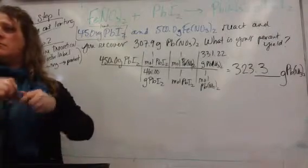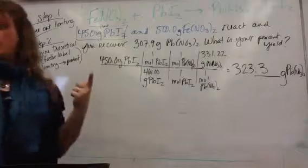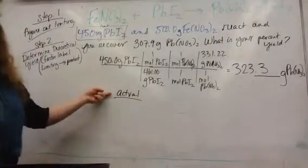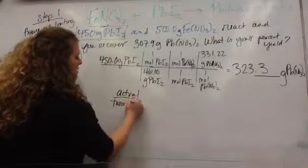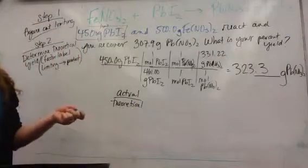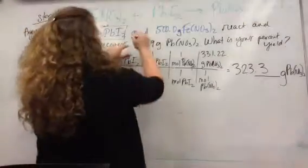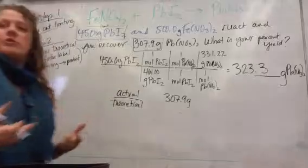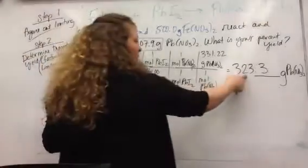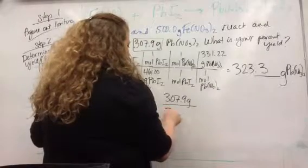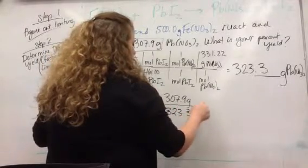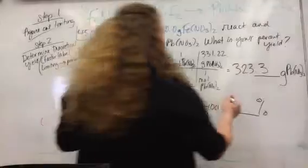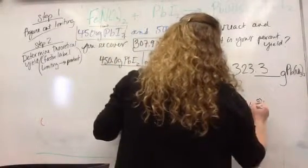How do you find your percent yield? Divide. Remember, it's actual, what you really got, over theoretical, what you should have gotten, times 100. So here's your actual 307.9 grams. That's what you really produced. What you should have been able to produce was this 323.3 grams. Multiplied by 100. 95.24%.